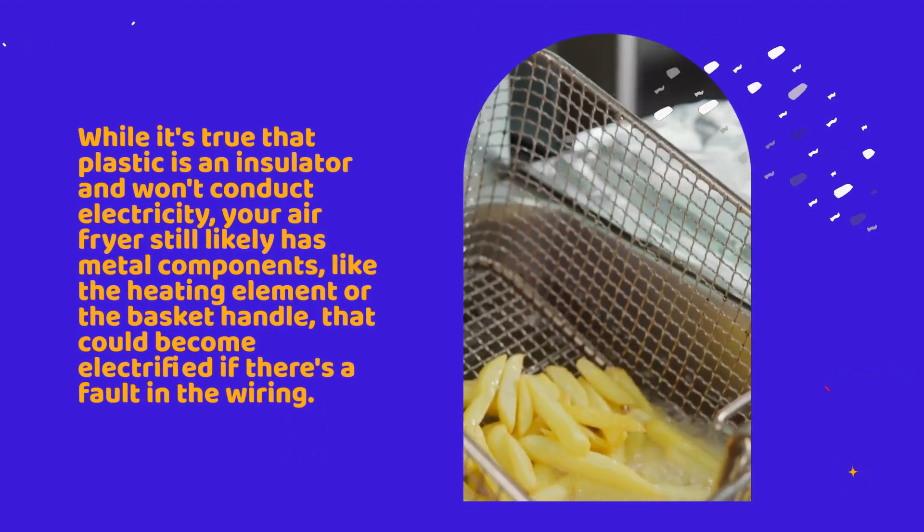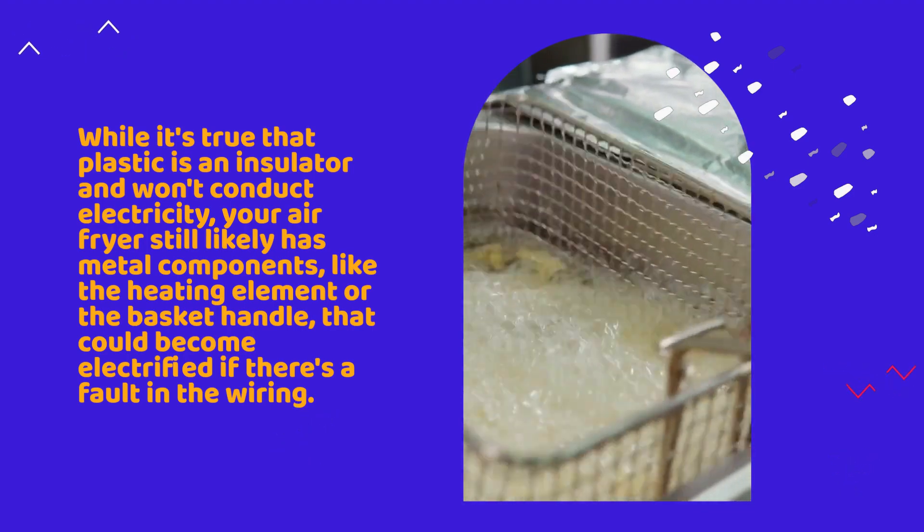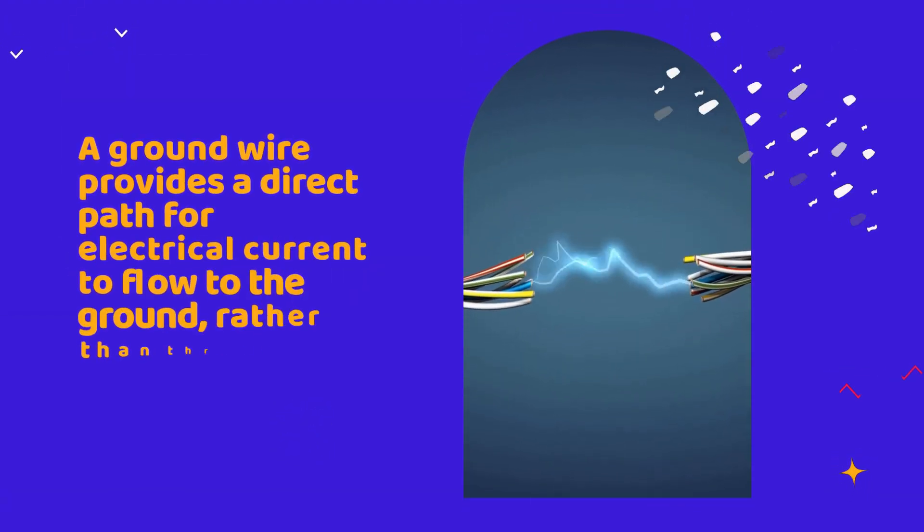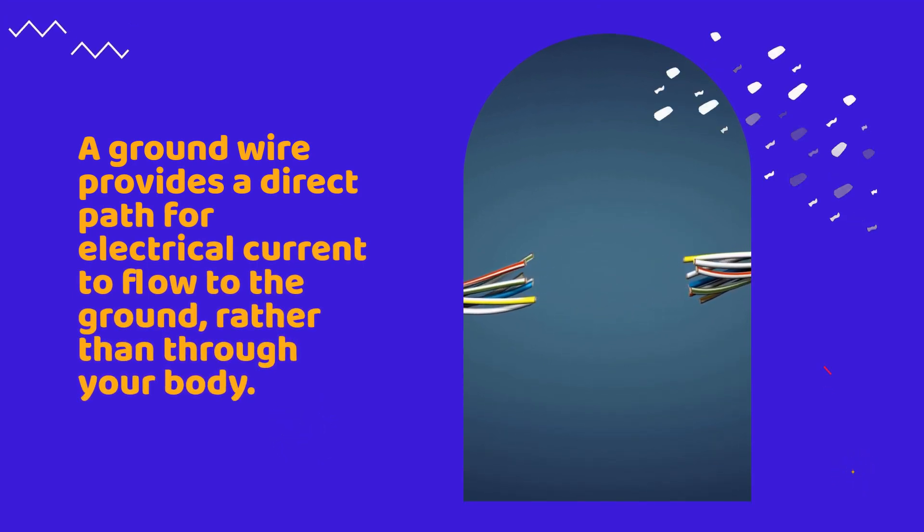While it's true that plastic is an insulator and won't conduct electricity, your air fryer still likely has metal components, like the heating element or the basket handle, that could become electrified if there's a fault in the wiring.